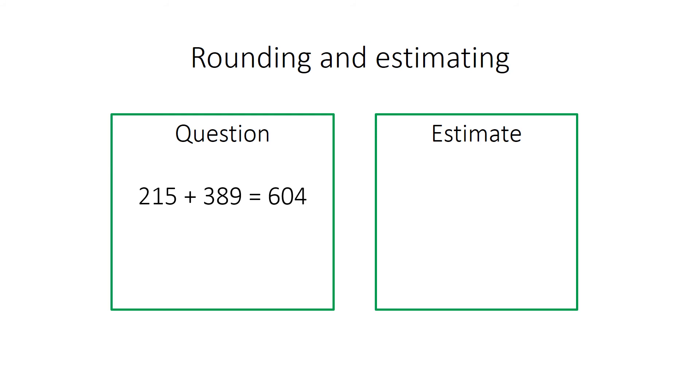But this sum here, 215 plus 389 is 604. So to estimate that, we can use this either as a prediction beforehand or as a check afterwards. I'm going to round to the nearest 100. And actually that's pretty close. So if we were using it as a check we just need to check we're sort of in the right ballpark and here we are.